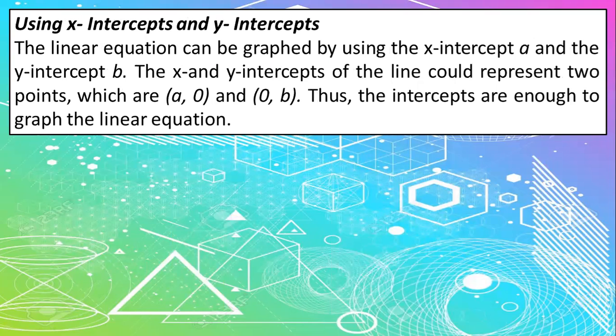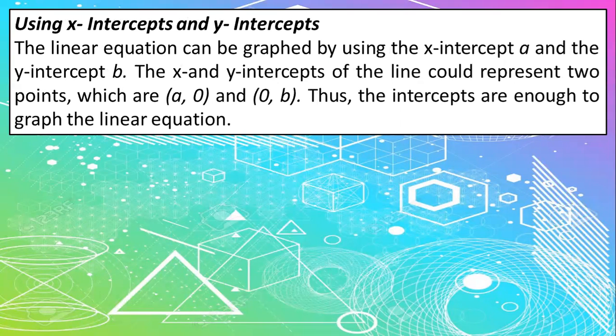So other than that, another method is using x-intercepts and y-intercepts. So as you can see in your SLG, it's defined as the x and y-intercepts of the line to represent two points which are (a, 0) and (0, b).